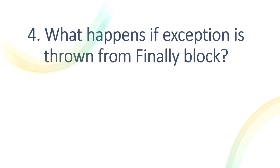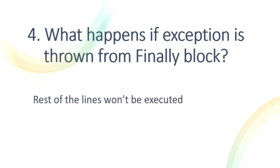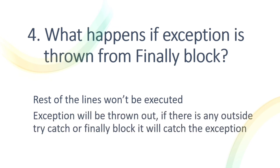What happens if an exception is thrown from the finally block? The finally block is written after the try-catch block and always executes after it. If an exception is thrown from the finally block, the rest of the lines won't execute, and if there is an outer try-catch or finally block, it will catch that exception.